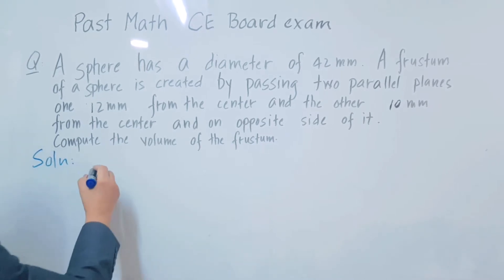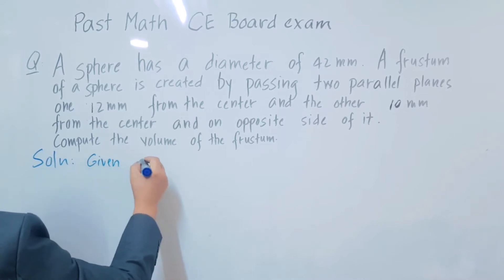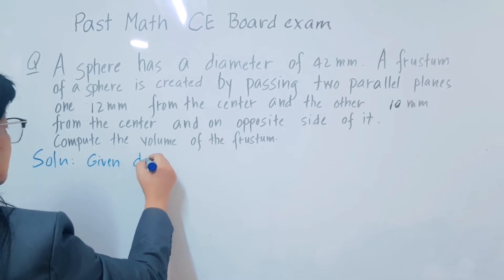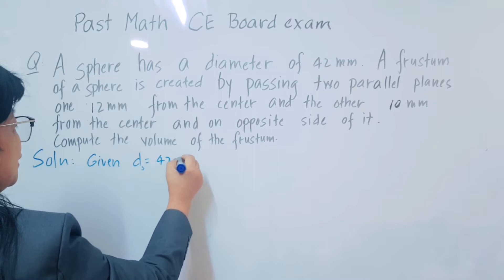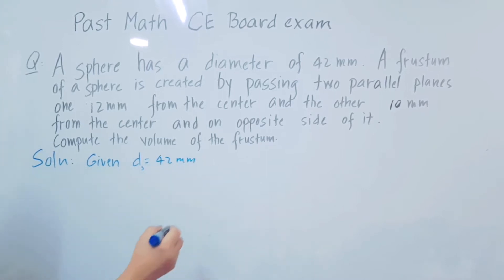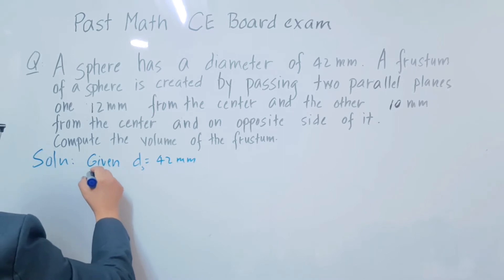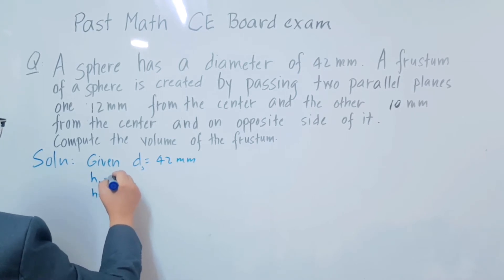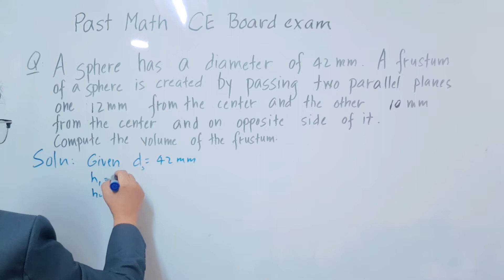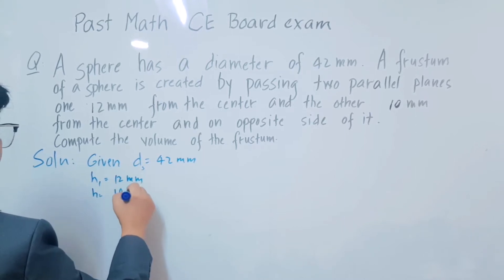We have the given: the diameter of the sphere is equal to 42. The question involves computing the volume, so from the solution, we place h1 and h2, which are equal to 12 mm and 10 mm respectively.